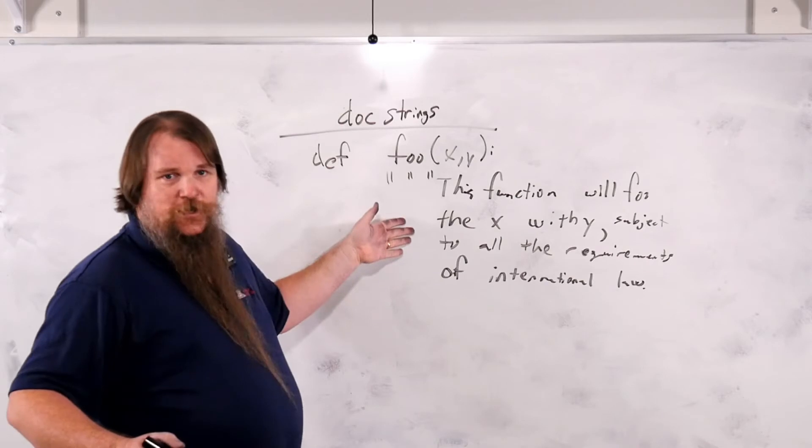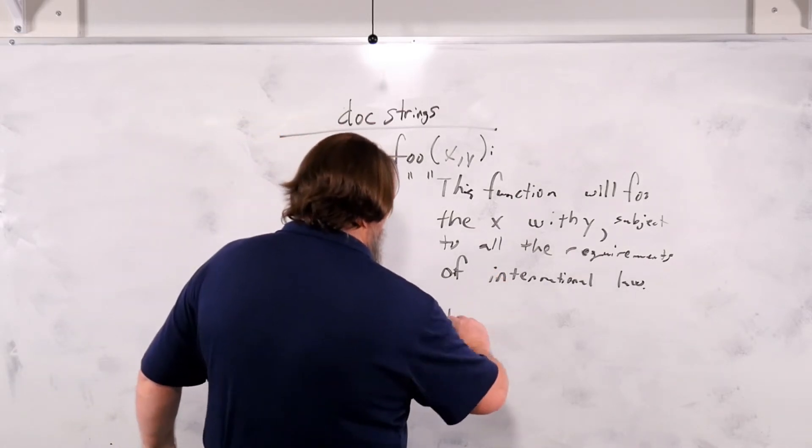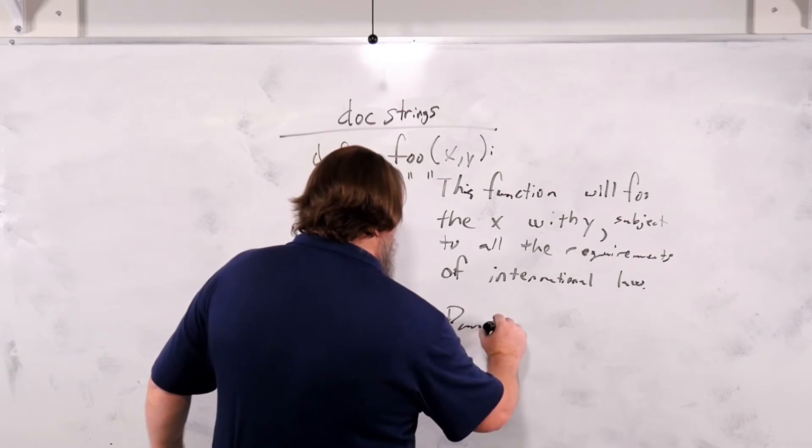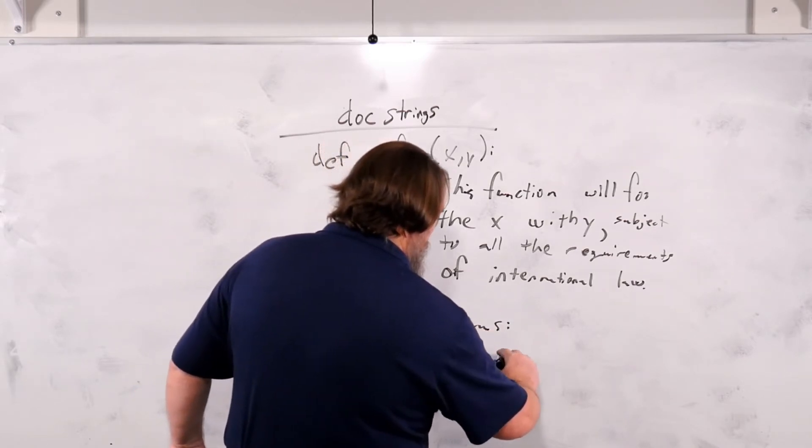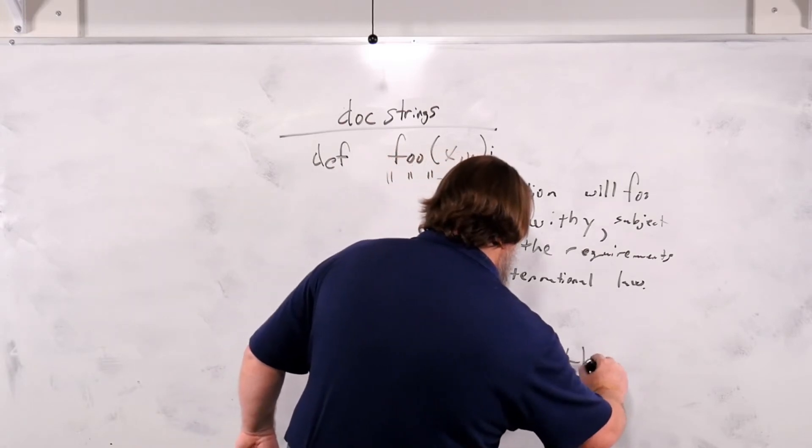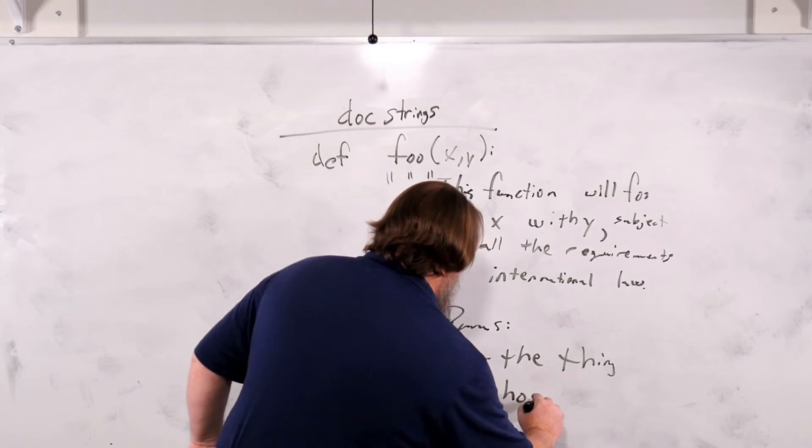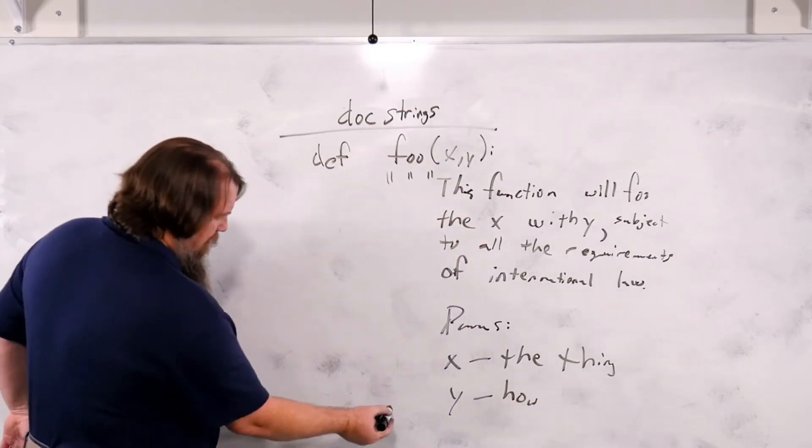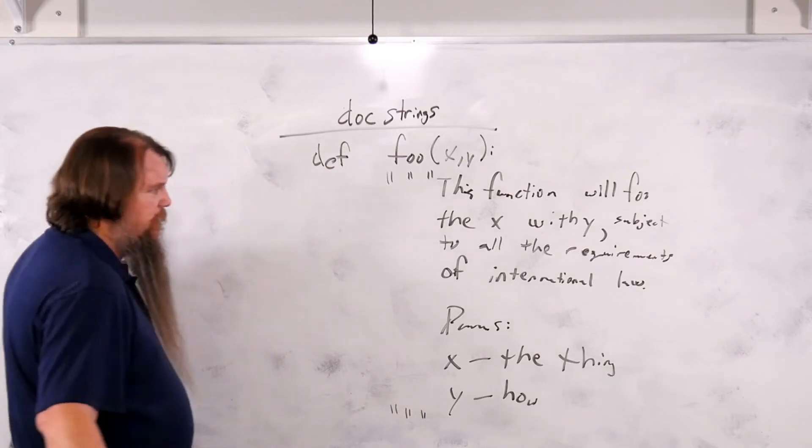But what you're going to do is you're going to have a description here and then you're going to have parameters, you're going to say x is the thing and y is how. And then you'll have triple quotes at the bottom to end.